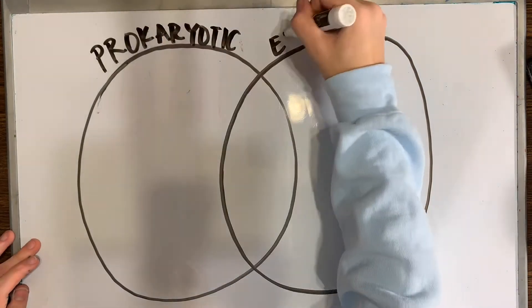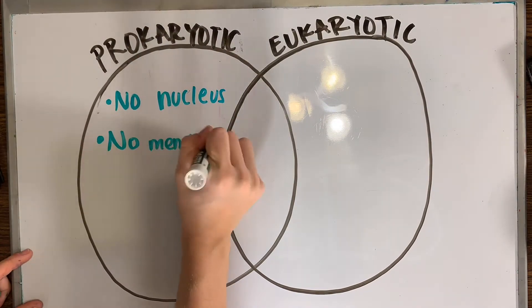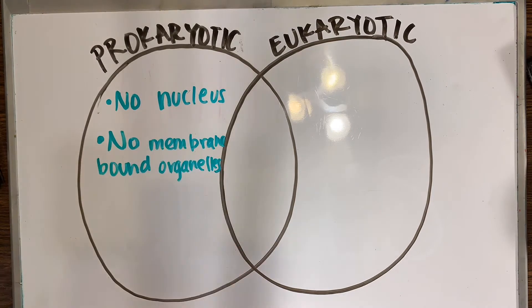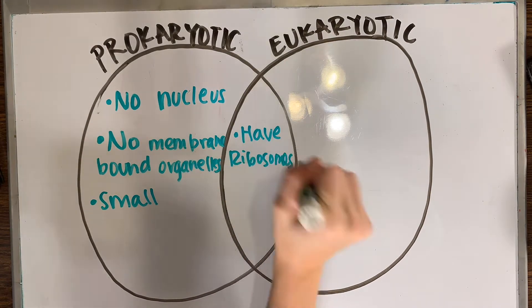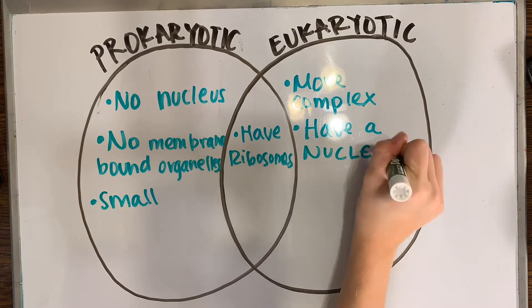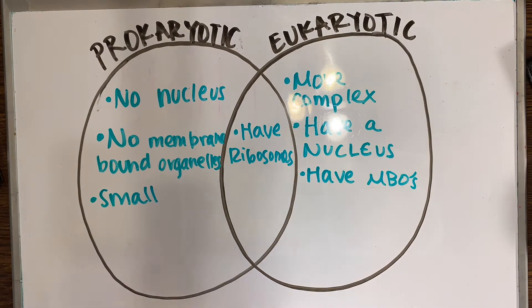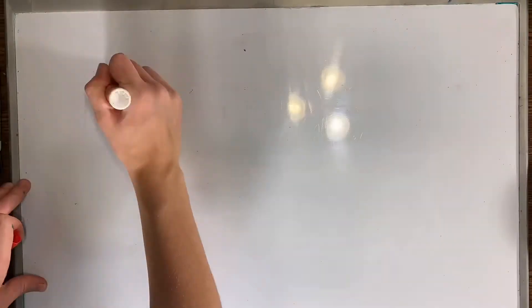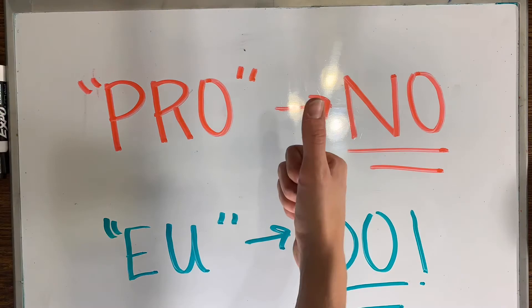The two types of cells are prokaryotic and eukaryotic. Prokaryotic cells are older cells that have no nucleus, no membrane-bound organelles, and are super small — they do however have ribosomes. Every eukaryotic cell is way more complex; they contain a nucleus and membrane-bound organelles and make up all cells that aren't prokaryotic. Just remember: pro means no — no nucleus, no membrane-bound organelles — and eu means they do have a nucleus and membrane-bound organelles.